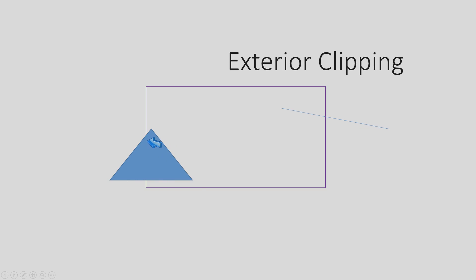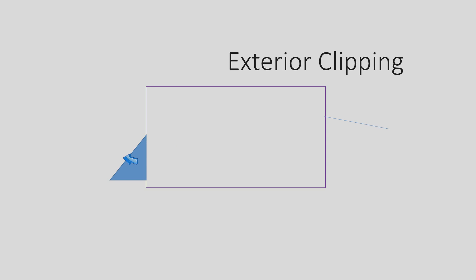Similarly for polygon clipping, we make slight amendments in which interior points are rejected and exterior points are accepted. After exterior clipping, the result will show only the parts of the polygon outside the clipping window. Hope you understand — thank you very much.